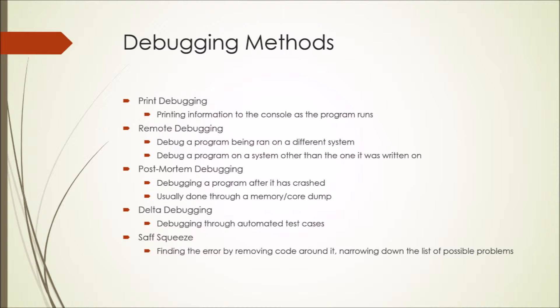Delta debugging is debugging through automated test cases, and is generally done on larger projects when debugging by hand isn't very efficient. And finally, there is one called the saff squeeze, which is when you debug by removing or commenting out code that you already know is correct to narrow down the possibilities of what could be causing the problem. While this is not a complete list of all the ways to debug, these are just a few of the most popular methods.